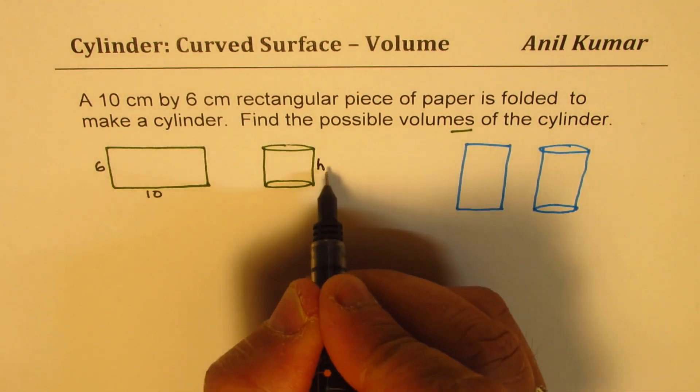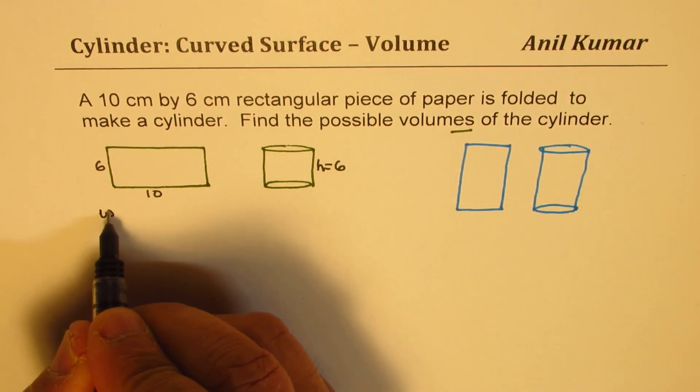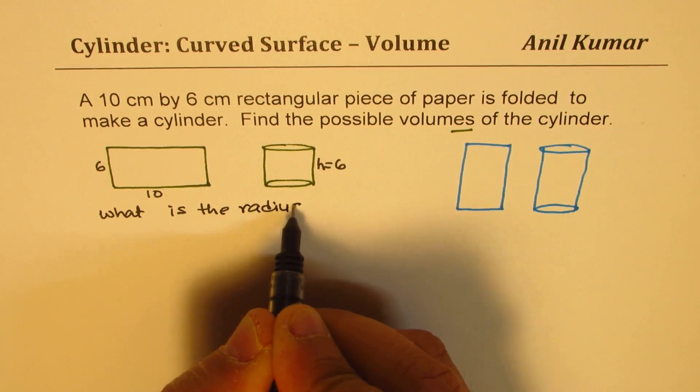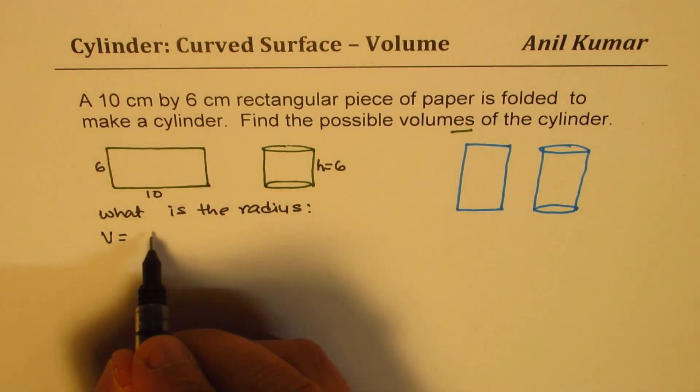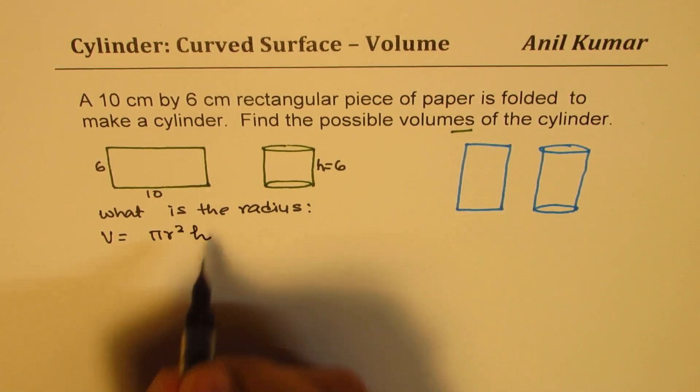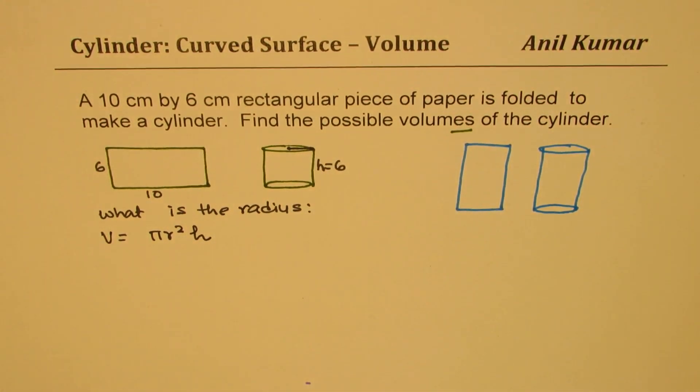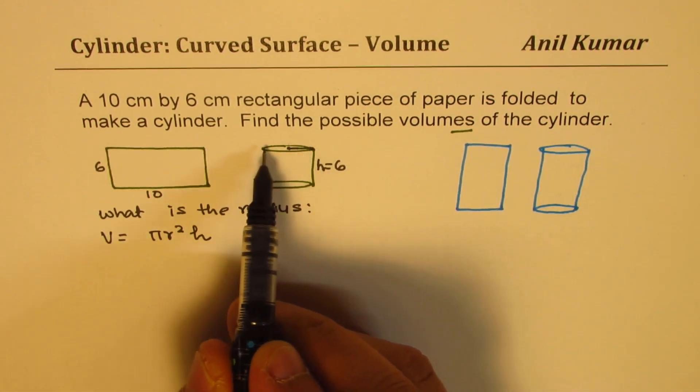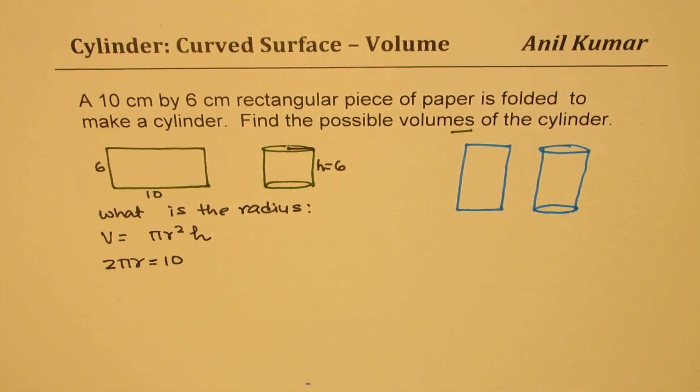So when I fold, in this case, height will be 6. But what is the radius? So the question is, what is the radius? Why do I need radius? Because I know that the volume for a cylinder is pi r squared h. So I need to find the radius of this particular cylinder. Now to find the radius, I know this length is getting folded into that circle. So that means 2 pi r, the circumference of this circle should be equal to 10. So that gives me an idea of the radius.